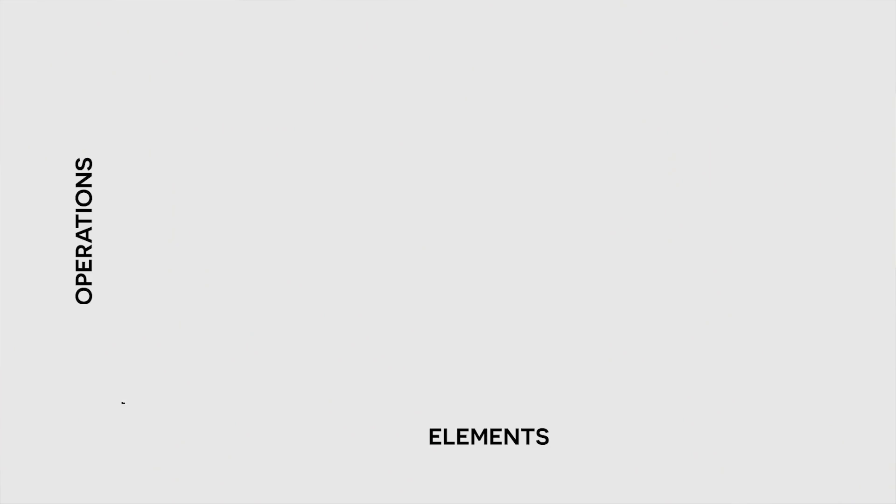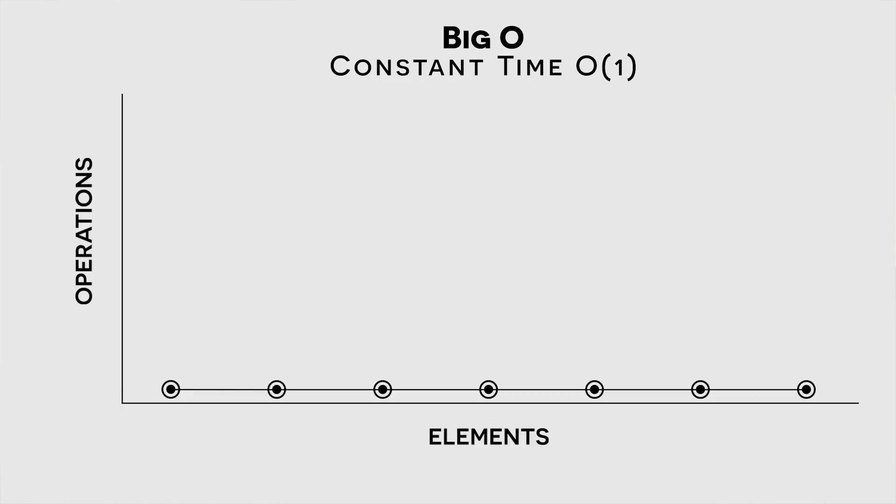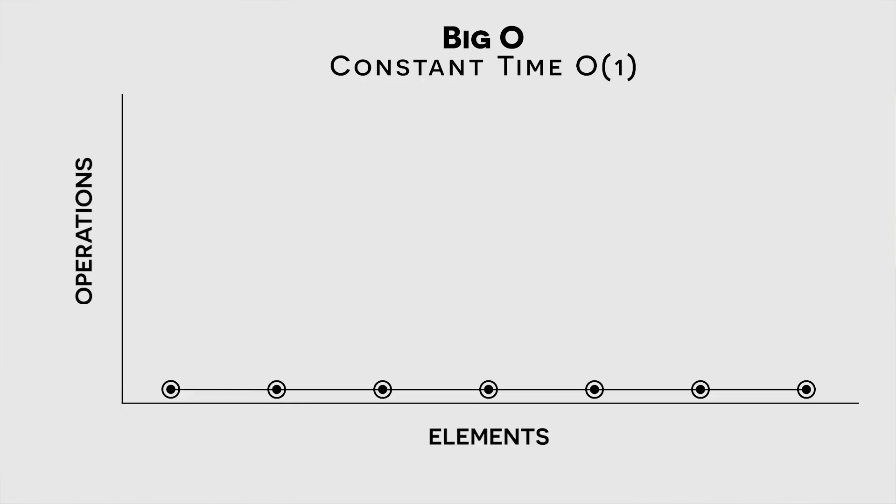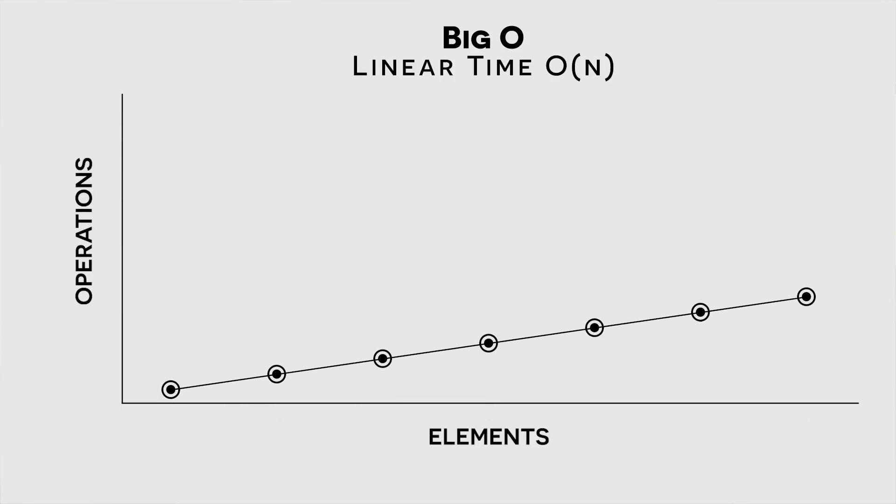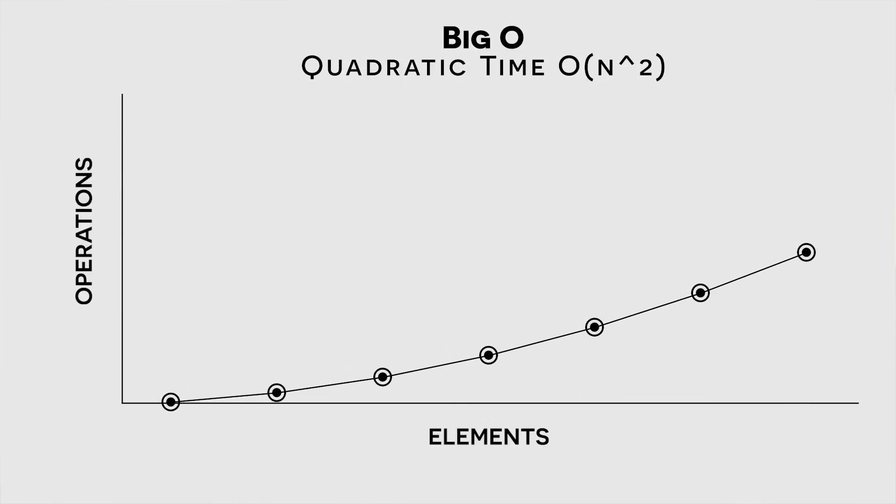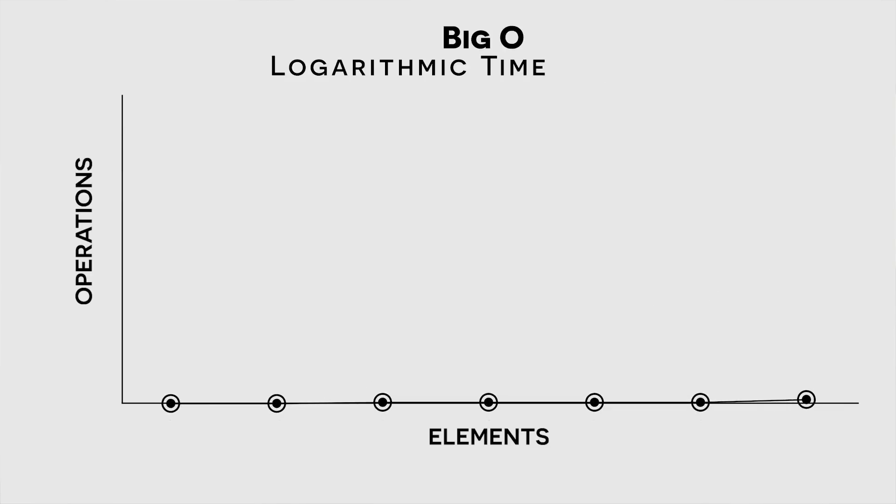So the most common Big O notation that you'll see is constant time, and that just means regardless of the input size, the runtime stays the same. You also have linear time, which means as the input size grows, the runtime grows linearly. Quadratic time, which means as the input grows, the runtime grows quadratically. And finally, logarithmic time, which means that as the input size grows, the runtime grows logarithmically.